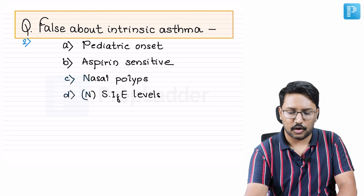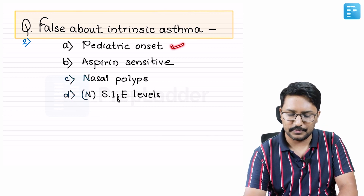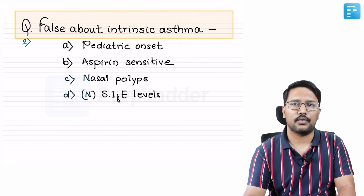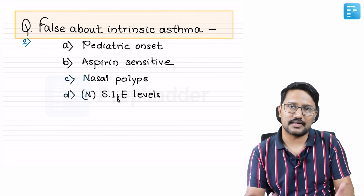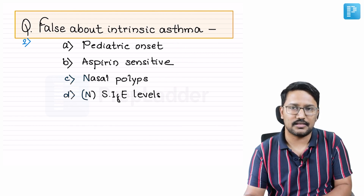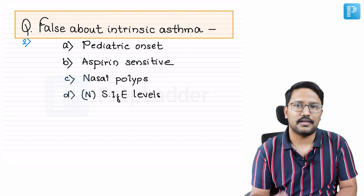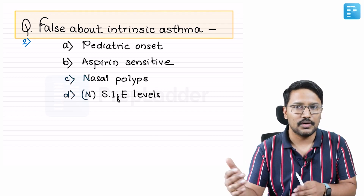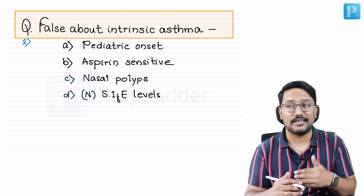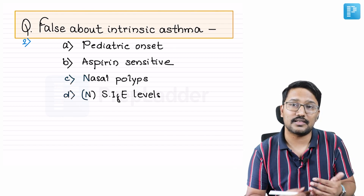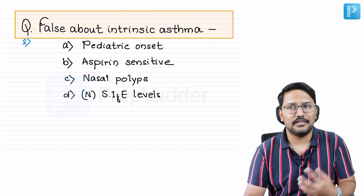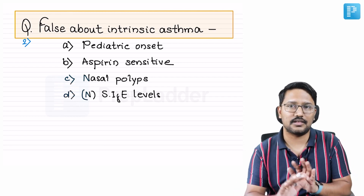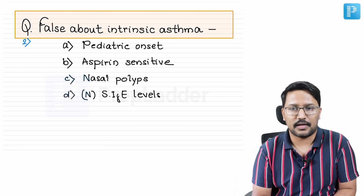The question is about intrinsic asthma. The options include pediatric onset, aspirin sensitivity, nasal polyps, and normal IgE levels. Asthma is often classified as intrinsic type and extrinsic type. Extrinsic asthma is immune-mediated, an allergic response to an environmental allergen — because the body is reacting to an external agent. Intrinsic asthma, by contrast, is generally believed to be non-immune mediated.